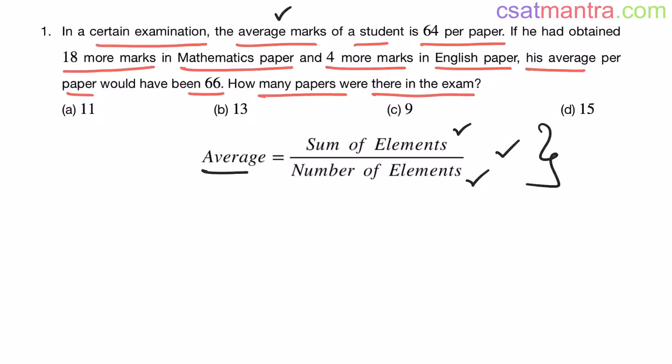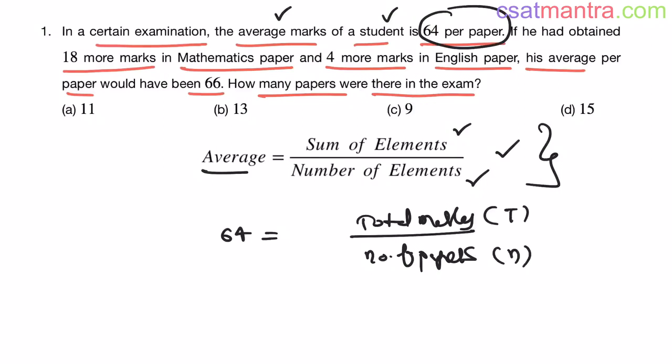See, the average marks of a student is 64 per paper. So average is 64, that is total marks by number of papers. Let's call total marks as T, number of papers as N. So 64 equals T by N. T equals 64N.